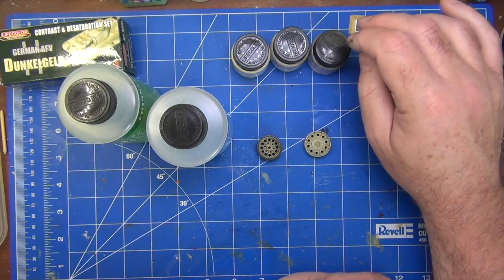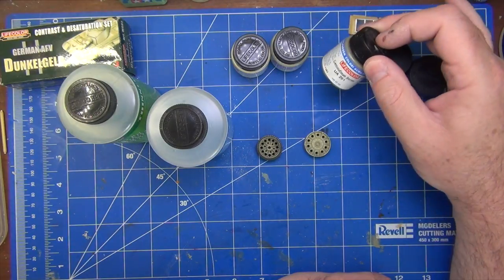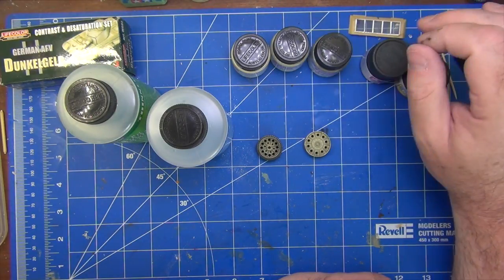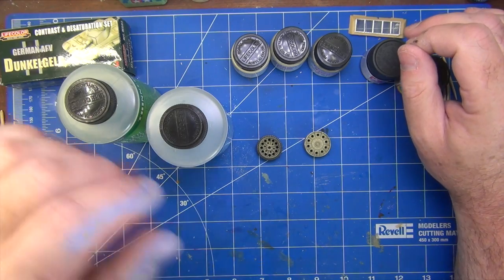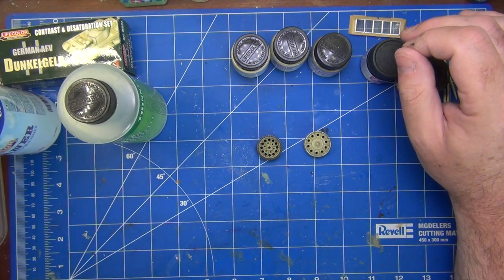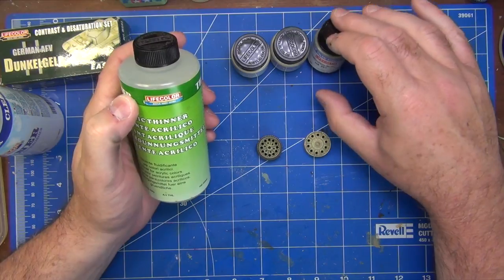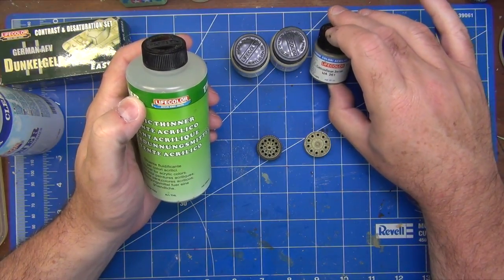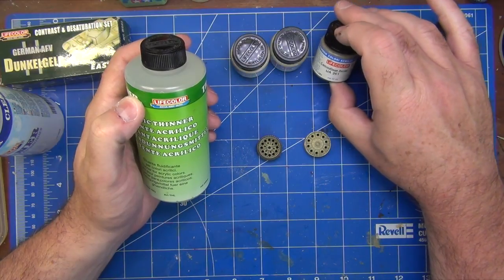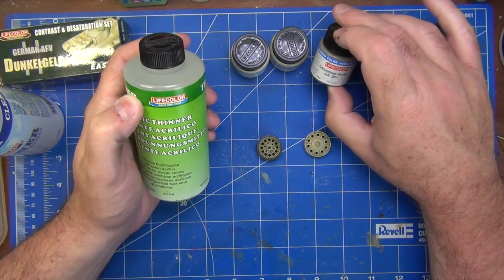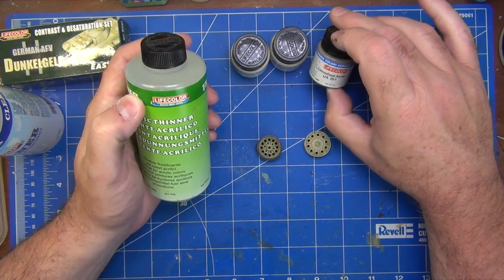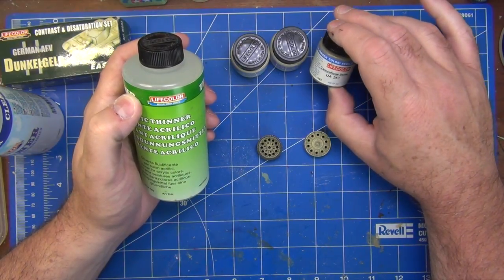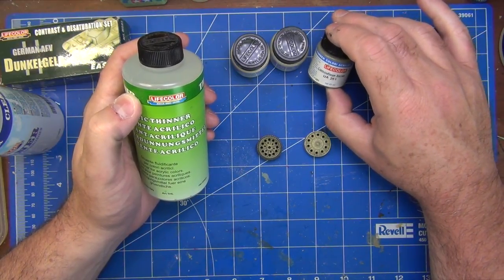They thin okay. There are various opinions about how much you should thin them. I tried everything from 70% paint, 30% thinner, to a 50-50 mix, and both worked for me. One thing I did find, though, is you've got to lower the air pressure on your airbrush quite substantially. So, where I might spray other paints at 22 psi or 17 psi, I think I had these down to as low as 12 psi.